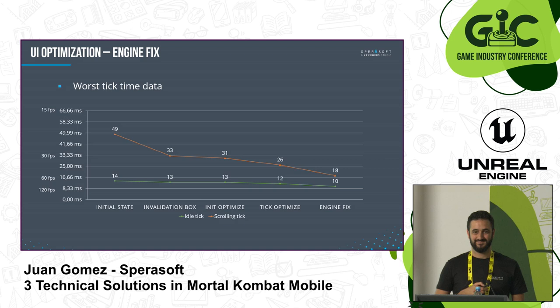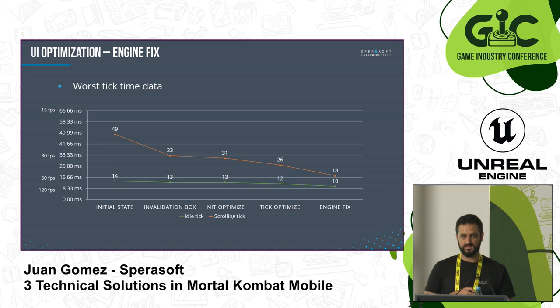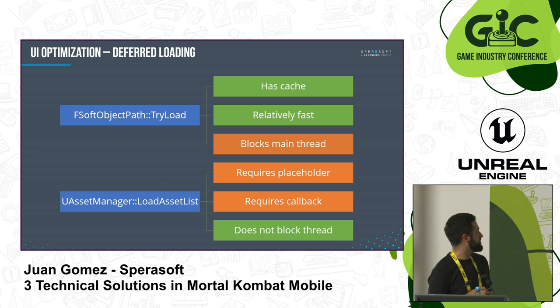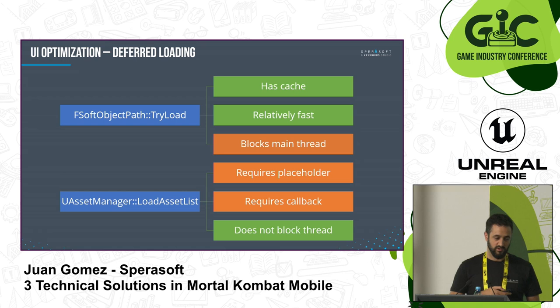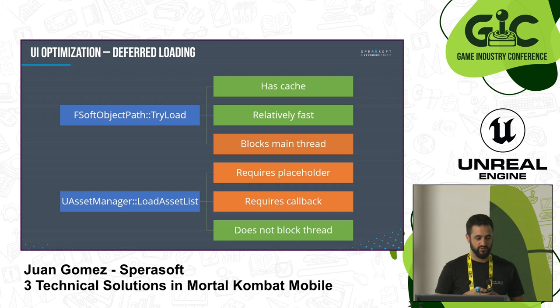Someone in the audience suggested memory access, and they're right. We are loading images synchronously — we use the TryLoad method, which is good and has cache so you don't load things multiple times, but it blocks the main thread. So we started using an asynchronous method called LoadAssetList. It requires more work — you need a placeholder for the image and a callback for when the image is loaded to replace it — but it doesn't block the main thread, and that is the key.